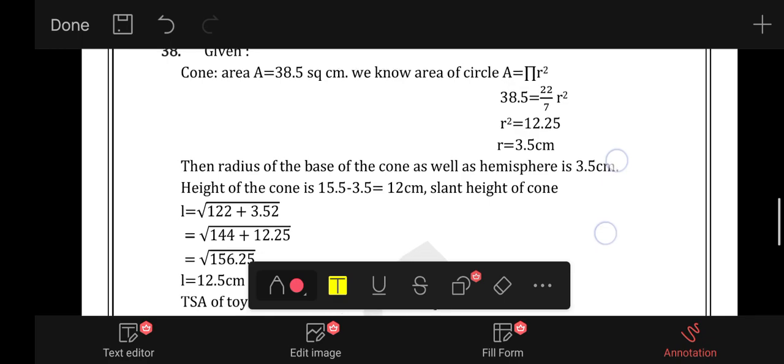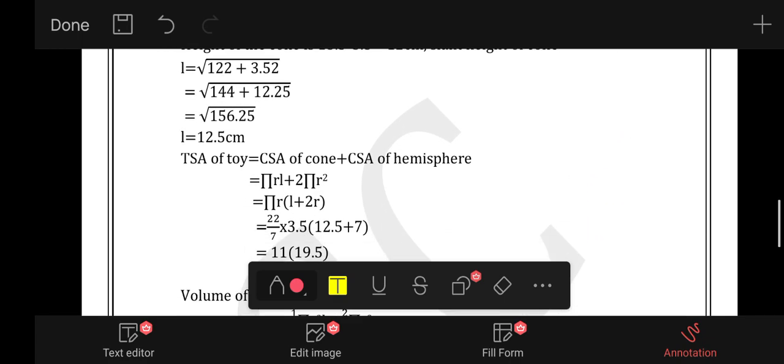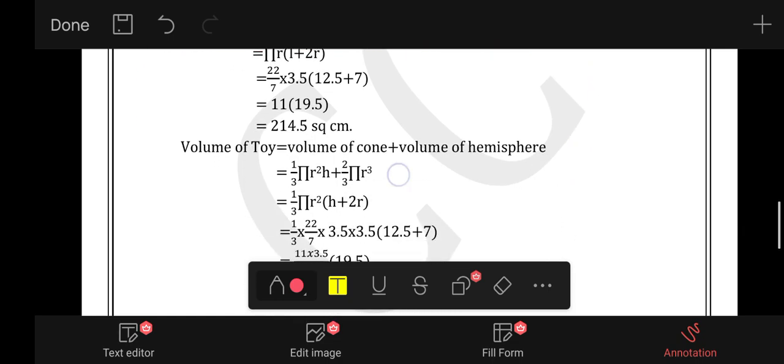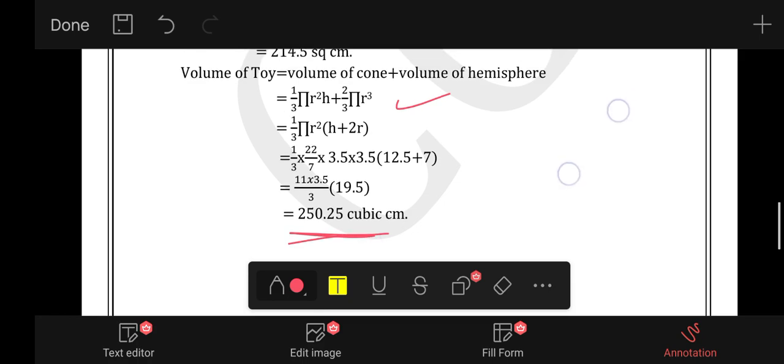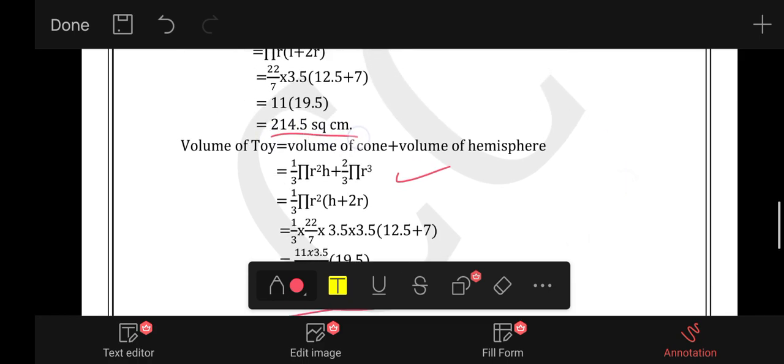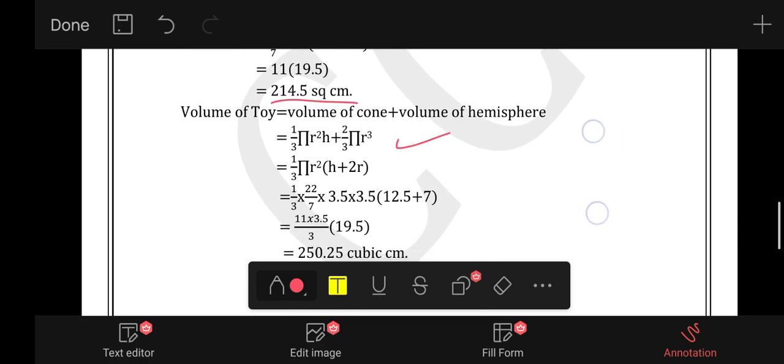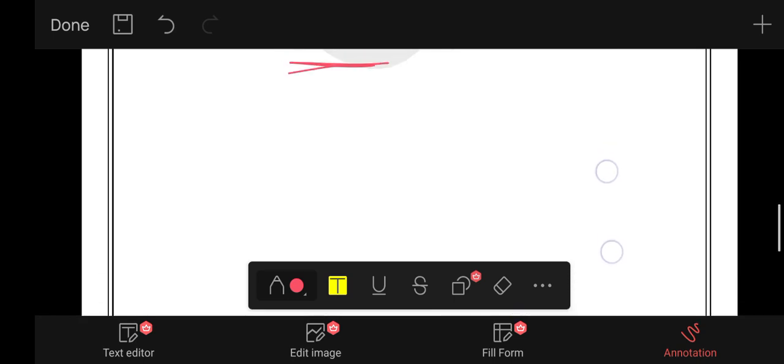Question 38, surface area problem - this is difficult. TSA plus TSA, CSA plus CSA of hemisphere, add the volume. Volume is 250, CSA 2 and 4.5. I'll explain this in full class and in the comment box.